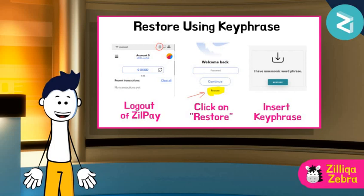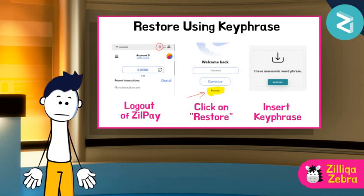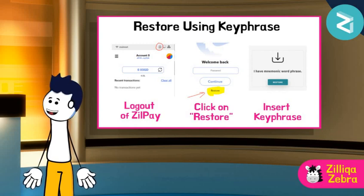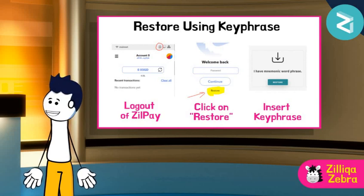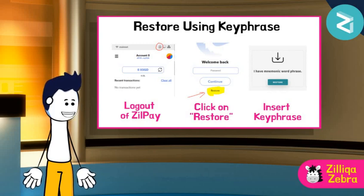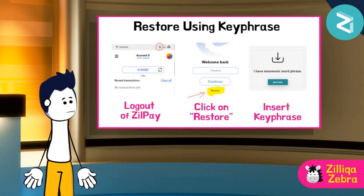To do so, he will first click on the lock-out button on ZIL Pay via the extension. Then he will retrieve his keyphrase for the Moonlit address. Zilliqa Zebra has kept this important and confidential keyphrase safely. He will click on the restore button and enter the keyphrase to restore his Moonlit address onto ZIL Pay. If he is unsure about the keyphrase, he can find it on the Moonlit app — just click on the top right wallet icon, slide right, then click on 'unveil phrase' to retrieve it.